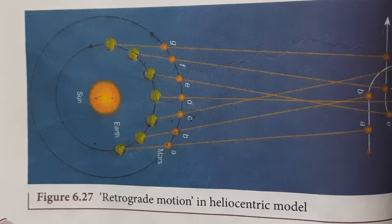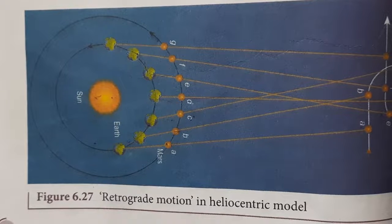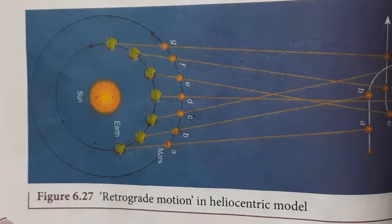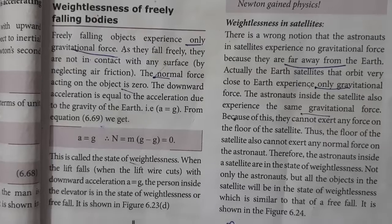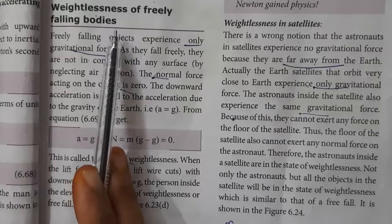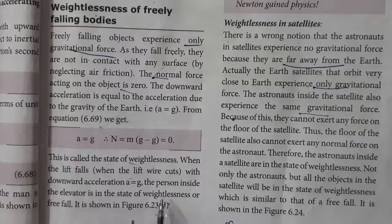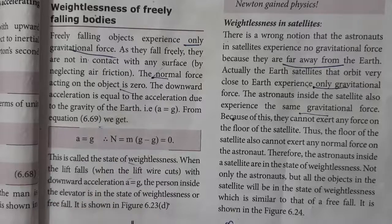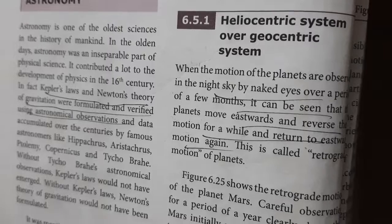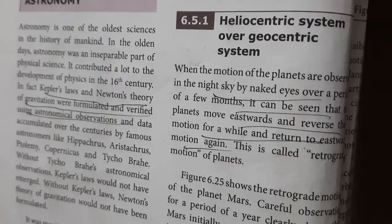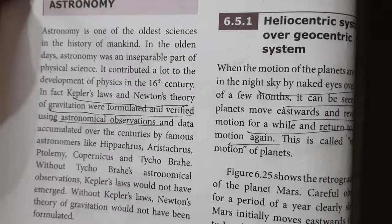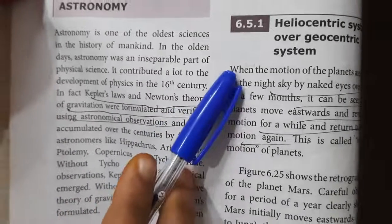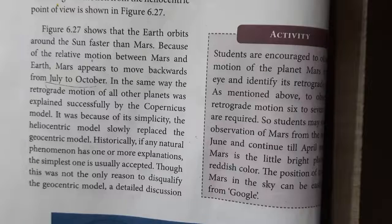Today we discussed weightlessness of freely falling bodies, weightlessness in satellites, and elementary ideas of astronomy — specifically the heliocentric system over geocentric system. Weightlessness of freely falling bodies is a very important topic — don't skip any points. You also need to learn how the heliocentric theory replaced the geocentric theory through the explanation of retrograde motion. Study these two questions carefully. Thank you, friends.